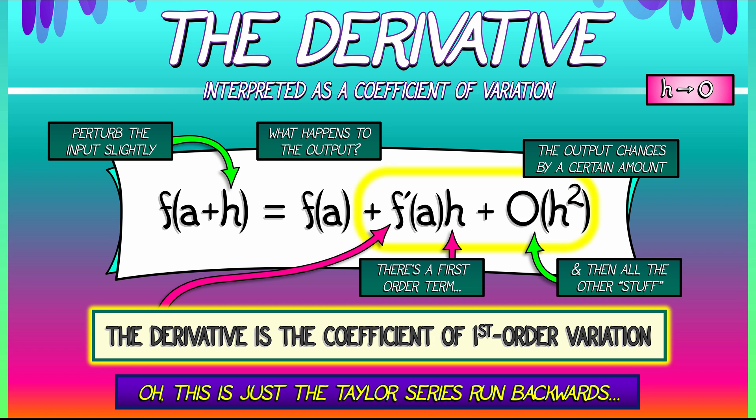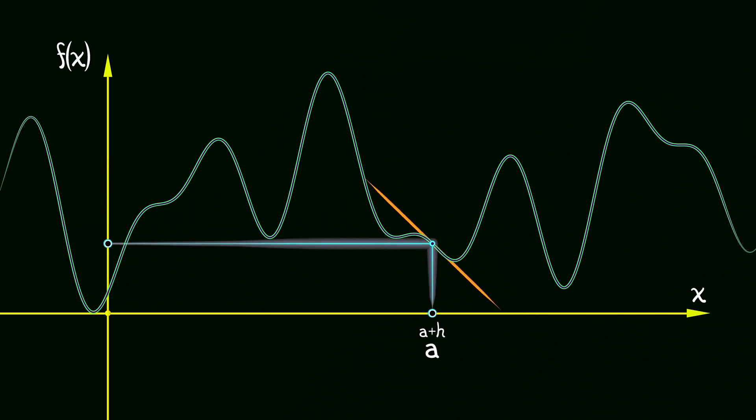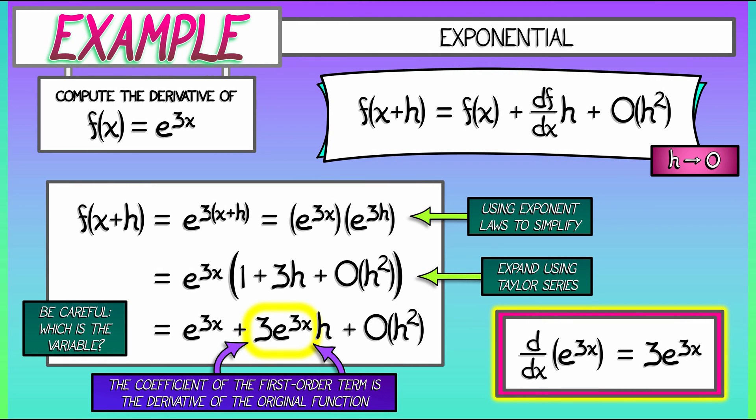This was useful in a number of different contexts as far as interpreting what the derivative really means, as far as seeing how, when you vary the input to a function, you get different order terms. And that first-order term dominates the higher order terms in the limit as the perturbation of the input goes to zero.